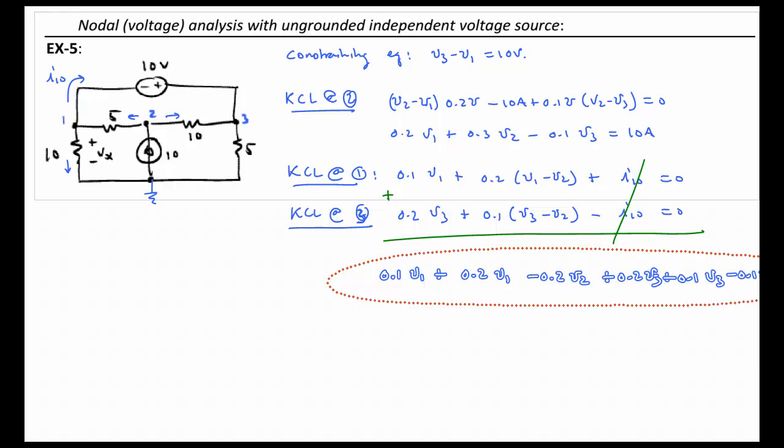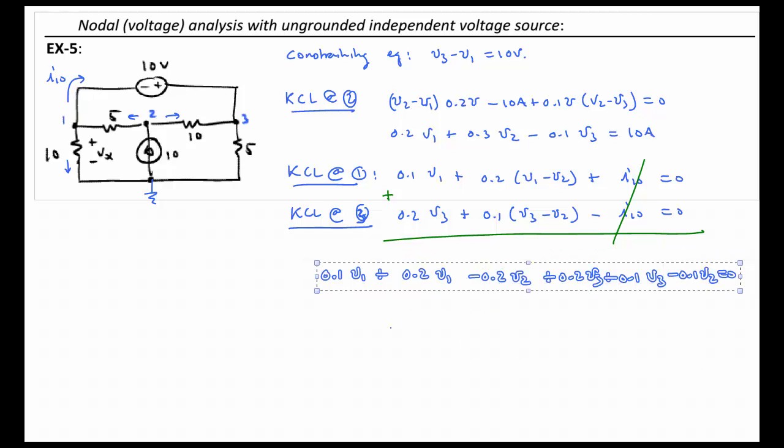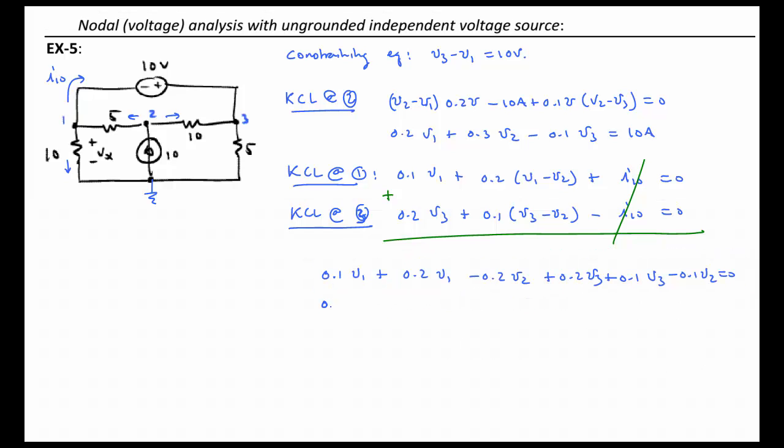I just realized that went off the page. Let's collect terms. We have 0.1 plus 0.2, that's 0.3 V1. For V2, we have a minus 0.2 and a minus 0.1, so that's minus 0.3 V2. And then we have a plus 0.3 V3.